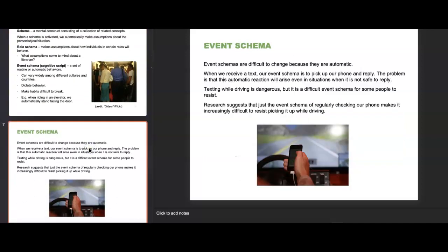Event schemas can be difficult to change because they are automatic. When we receive a text, our event schema is to pick up our phone and reply — the problem is this automatic reaction will arise even when it's not safe, like texting and driving. Research suggests that regularly checking our phone makes it increasingly difficult to resist picking it up while driving. Event schemas can also differ across cultures and generations — would a Christmas schema be the same for every family? A music concert schema might mean a huge pop or country concert to you, but might mean classical orchestral music to your grandparents.